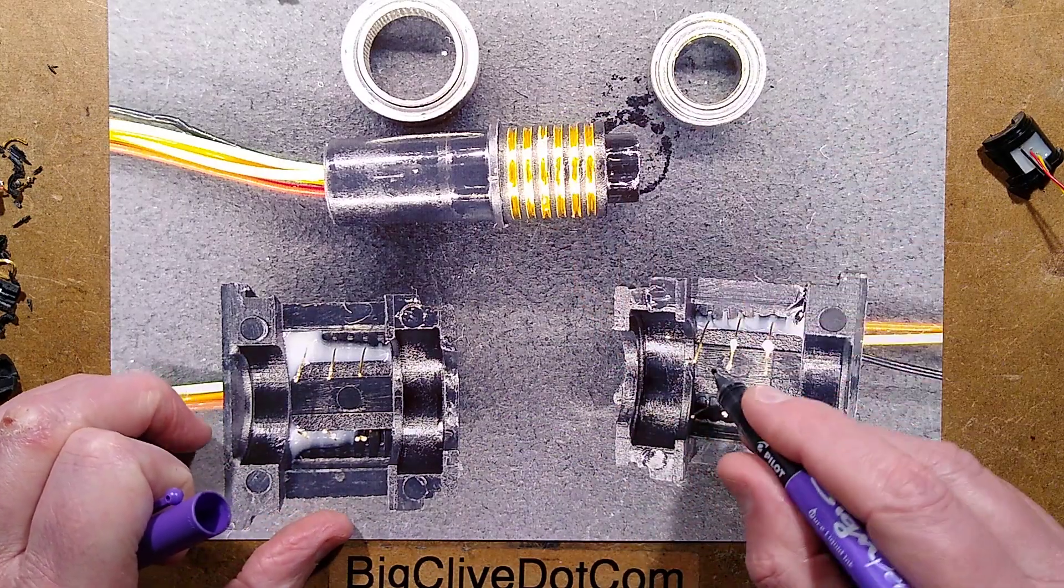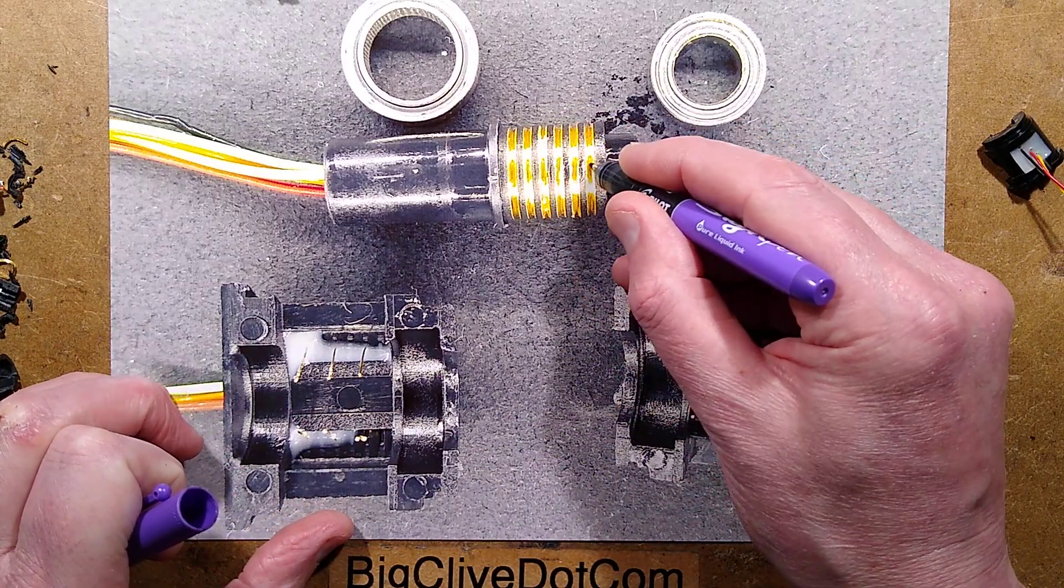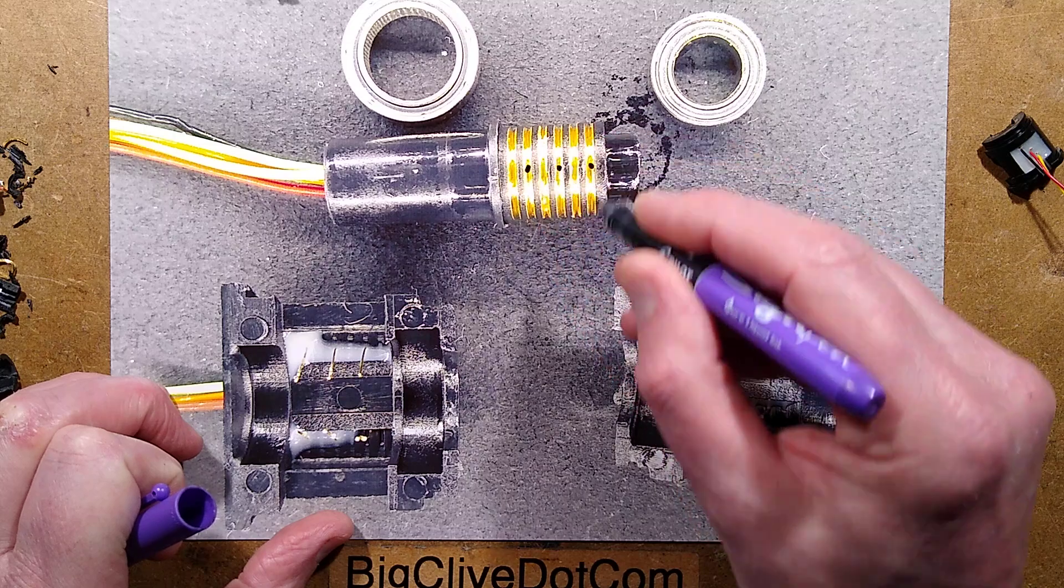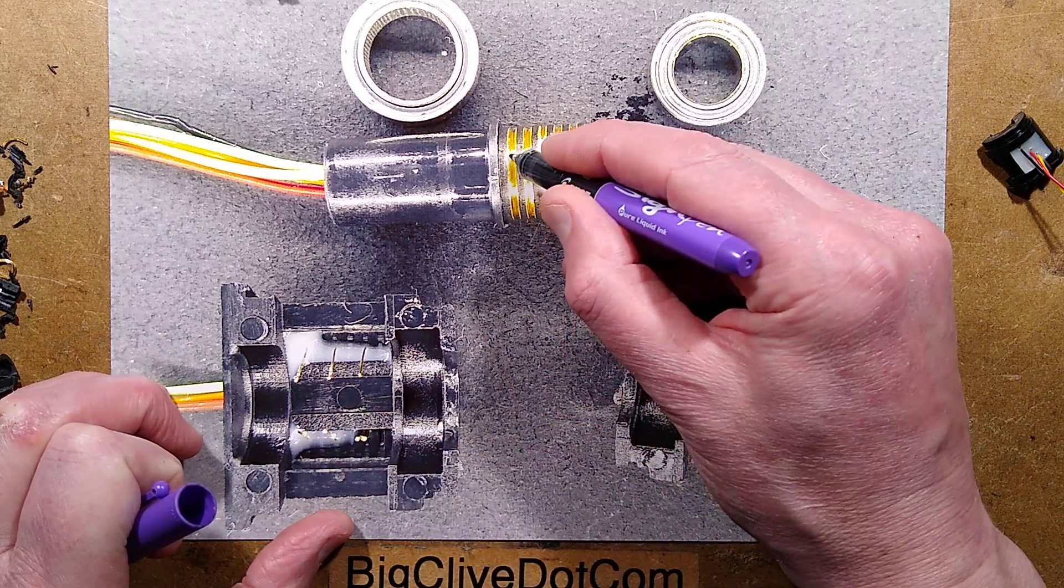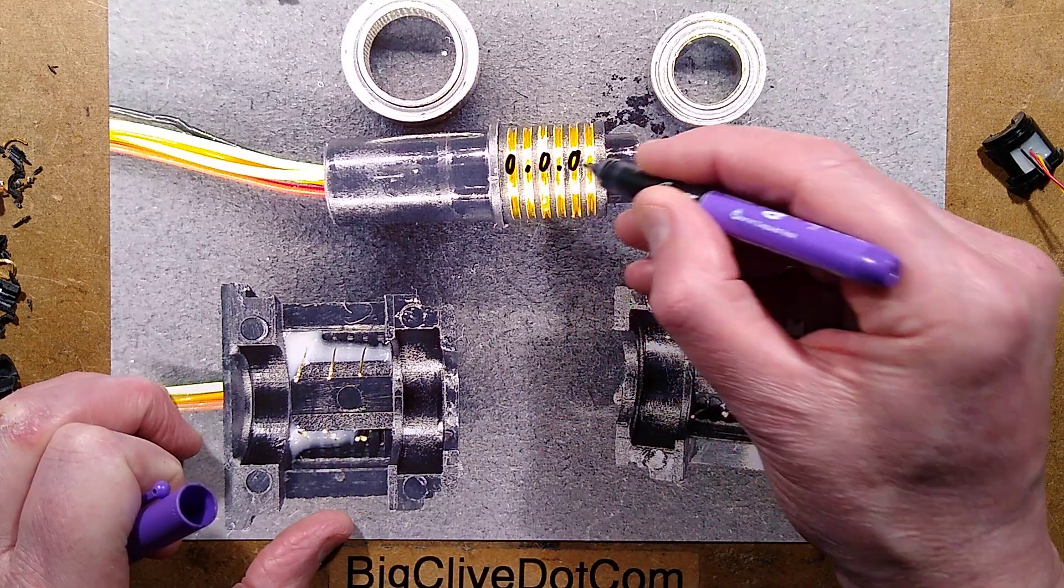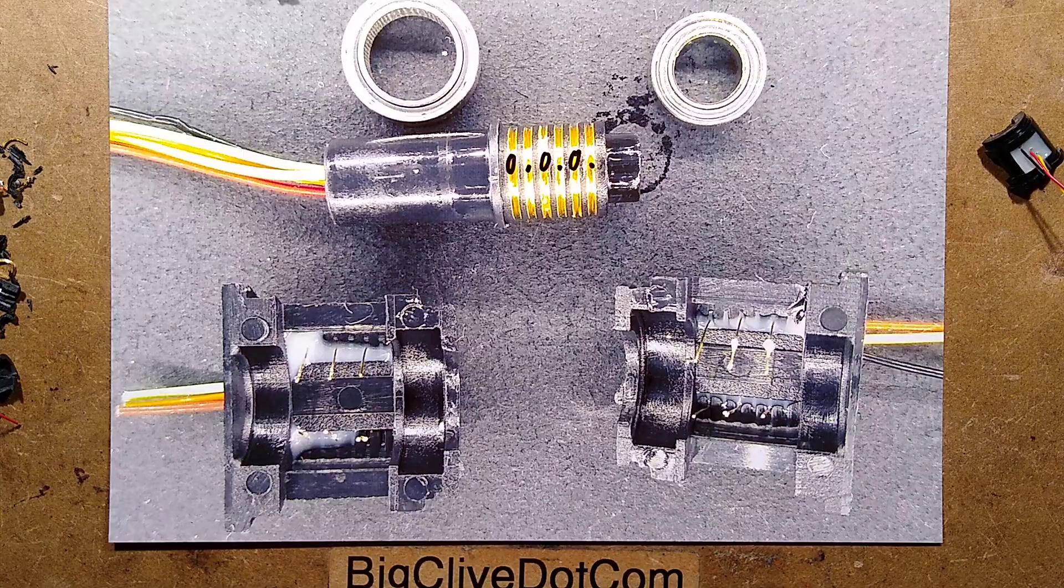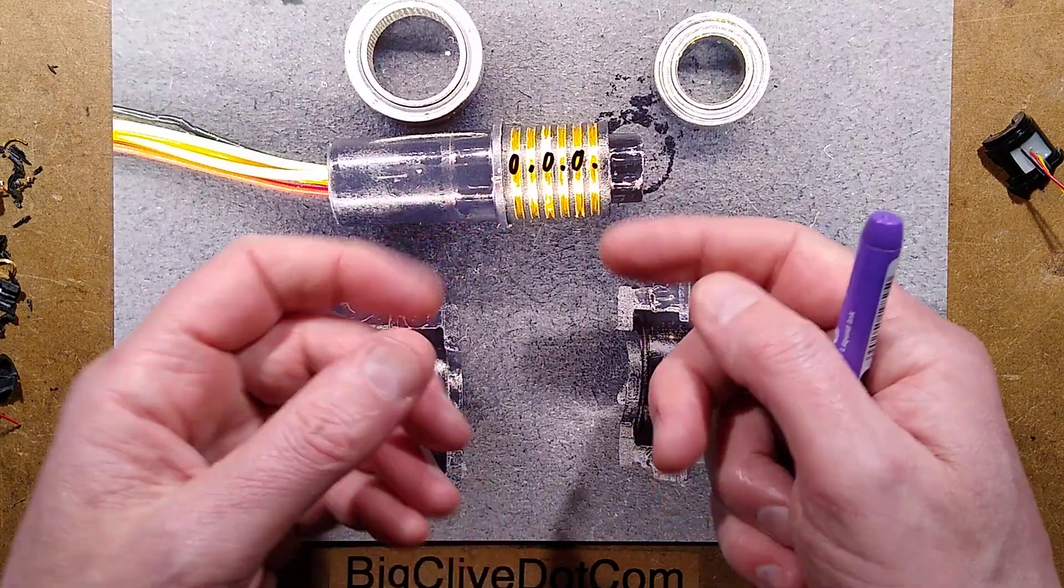But they sit on either side of one of these rings, and they're staggered so that this one may do, say, this ring, this ring, and this ring. And this one would do that ring, that ring, and that ring.